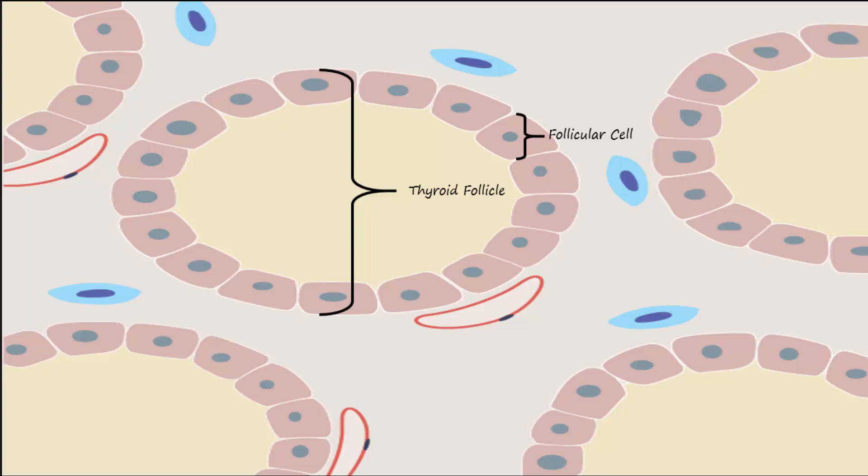Here we see a capillary surrounding the follicles. After thyroid hormone is made by the follicular cells, it enters circulation via such capillaries.